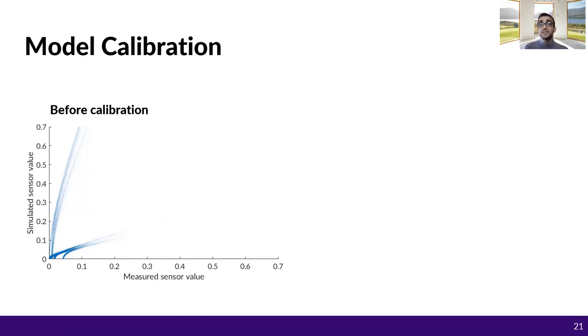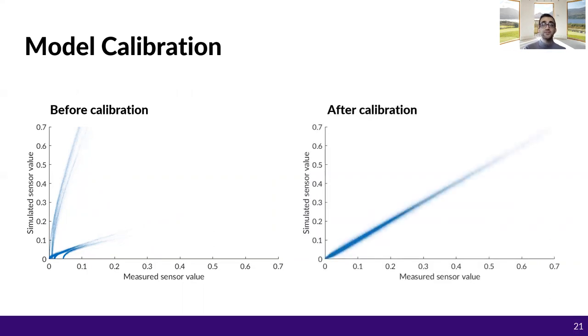These should be perfectly correlated with a perfect calibration. Without any calibration, as you see, the measured sensor value does not correlate with the simulated sensor values. After calibration, though, data measured by the AutoRing system matches the synthetic data.